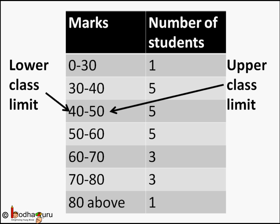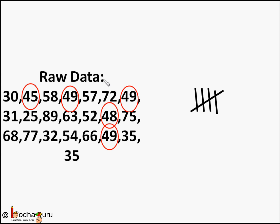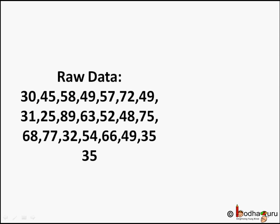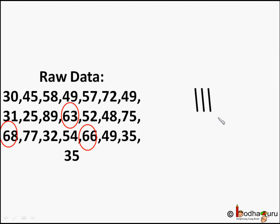Now how many students got 40 to 50? 1, 2, 3, 4, 5. Tally marks are quite useful in counting here. How many students got 50 to 60? 4 students. How many students got 60 to 70? 3 students. And only one student got above 80.